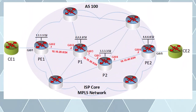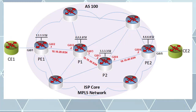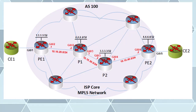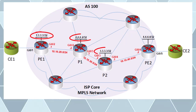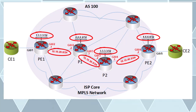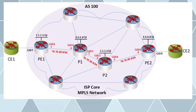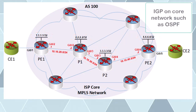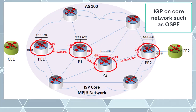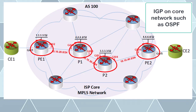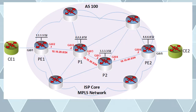Much of the configuration of the underlay network remains the same as that used for Layer 3 VPNs. Since this has been covered in previous videos we'll just quickly review it here. We start off by configuring all interfaces with the appropriate IP addresses including the physical and the loopback interfaces. We then configure an IGP such as OSPF on all P and PE routers so that all their networks are advertised to each other, making all networks reachable from all P and PE routers.